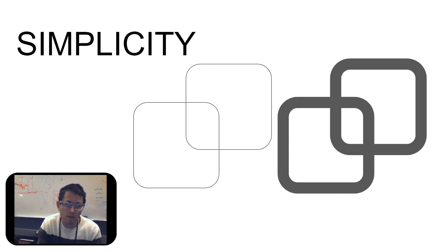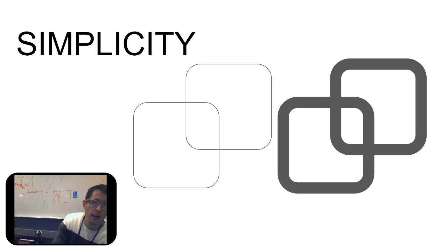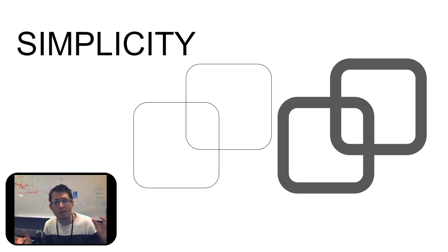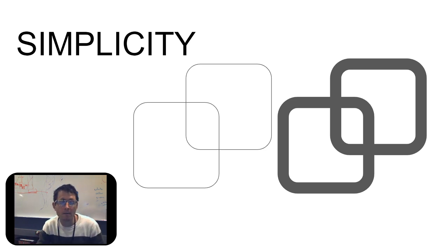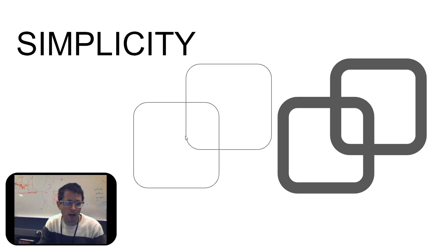There are a couple of core ideas of Gestalt, and they've been codified in a couple of terms. The first is simplicity — the idea that we're able to find the simplest form out of shapes. A lot of times this is based on tangents that lead to each other. So when we look at these two shapes, we don't necessarily see shape one, shape two, and shape three.